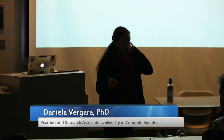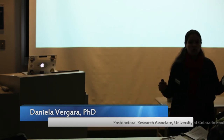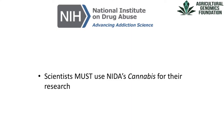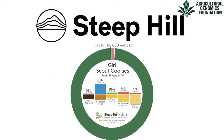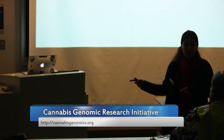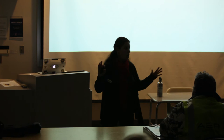Scientists who want to study cannabis must use plants grown for NIDA — the National Institute of Drug Abuse, part of the NIH — at the University of Mississippi. Private companies like Steep Hill test for cannabinoids and terpenoids from the private market. We have an ongoing collaboration with Steep Hill, and they provided us their data, allowing us to compare cannabinoids from the private market to those from NIDA.